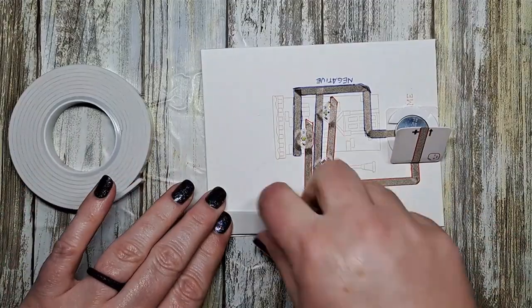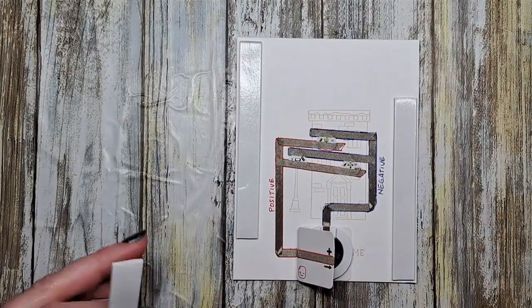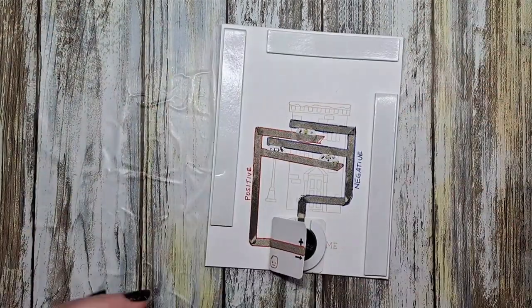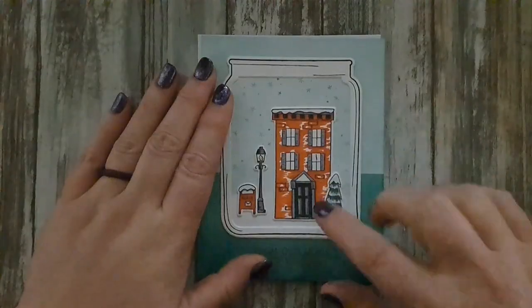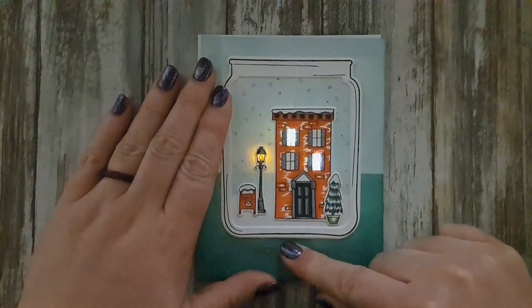To finish off our card we need to put our three-dimensional foam on around our circuit. This just helps hold up the card front. Let's give our switch a press and there's our card for today.